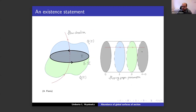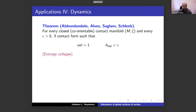If you have such a disk-like global surface of section, you can write the flow as a flow in a solid torus — you have this isotopy of maps on the disk. Let me then move on to describe some applications to dynamics.